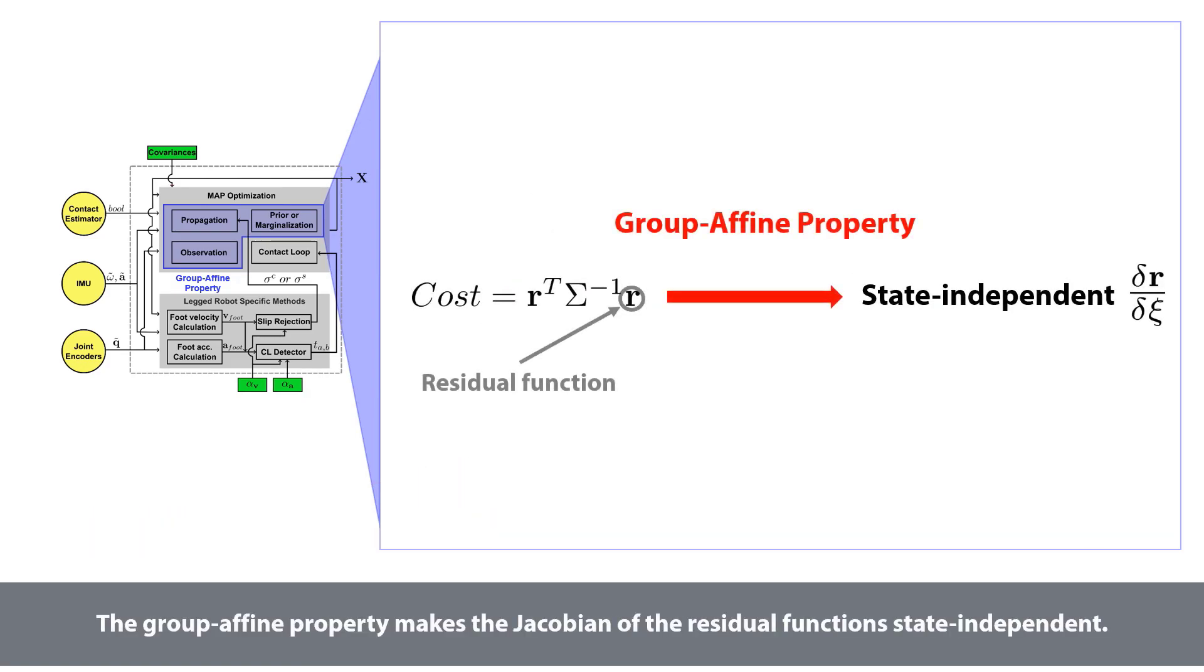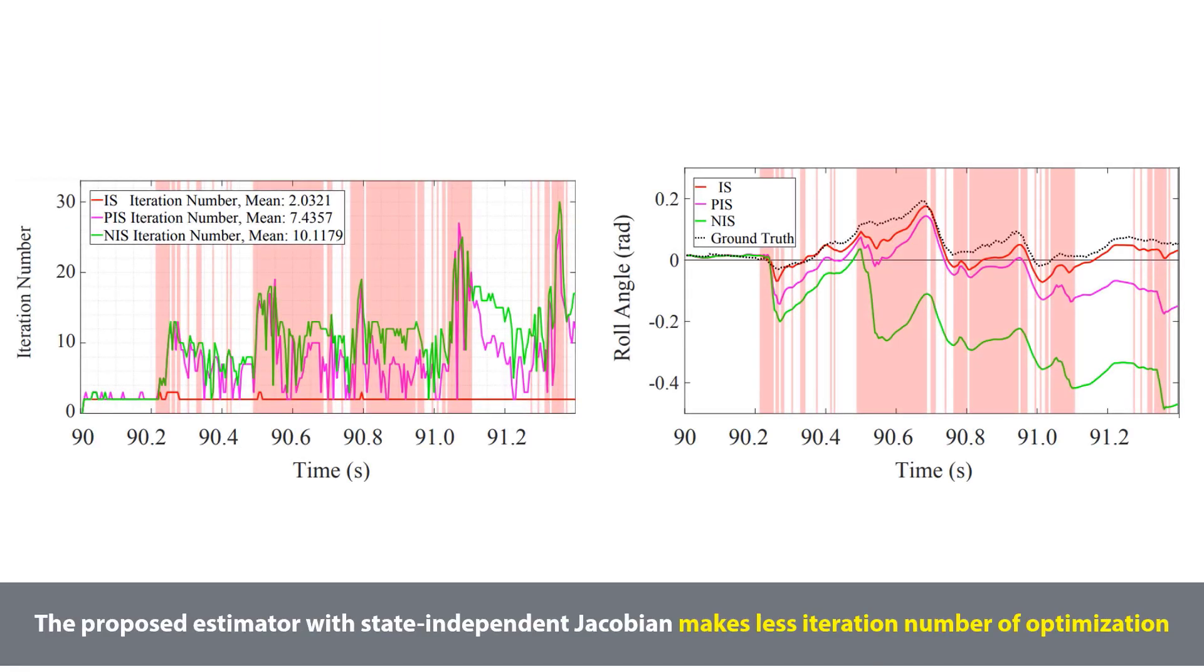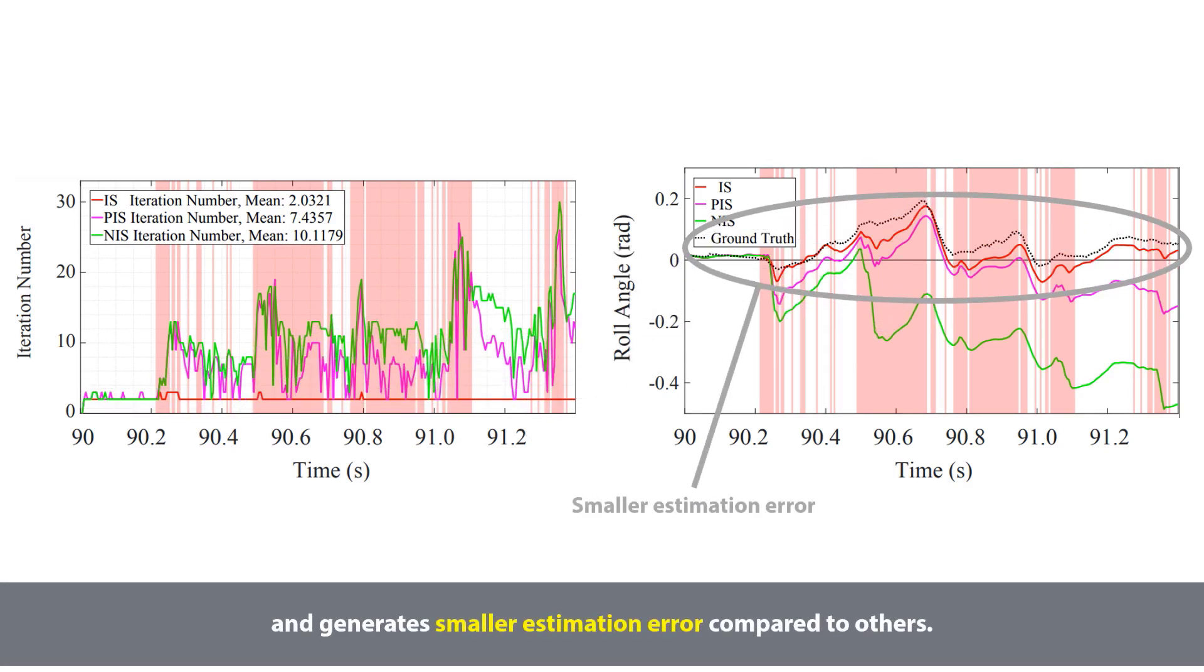The group affine property makes the Jacobian of the residual functions state independent. The proposed estimator with state independent Jacobian makes less iteration number of optimization, and generates smaller estimation error compared to others.